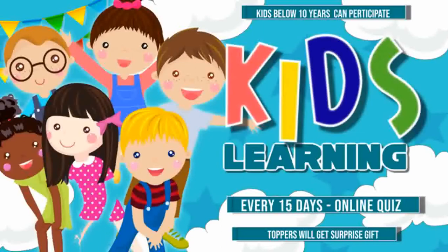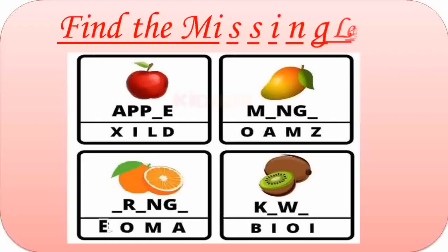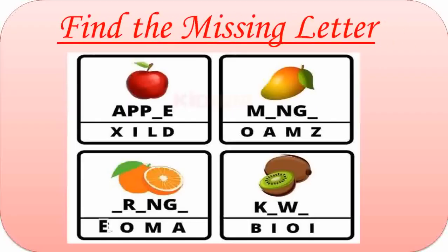Yesterday I uploaded one video on phonic sounds of English alphabets and its word formations. So today I am here with missing letters of words. Now start. Find the missing letters. First word is Apple. The missing letter is L. So the word becomes A-P-P-L-E, Apple. Next word is Mango. Missing letters are O and A. The word becomes M-A-N-G-O. Mango.